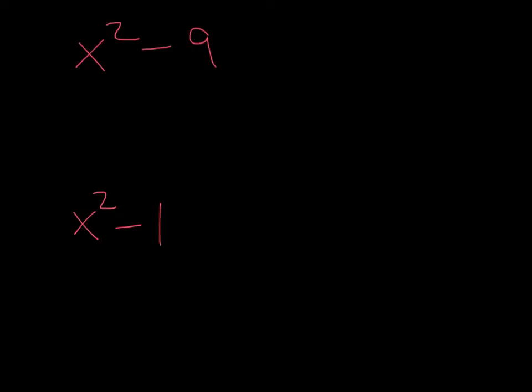I'm going to run through some examples so that you get the idea. You always check to see if you can take out the greatest common factor. Here, there is no greatest common factor. We have two terms and it is subtraction. So now all you're checking is whether you can take the square root of each of the terms. You ignore the negative sign.